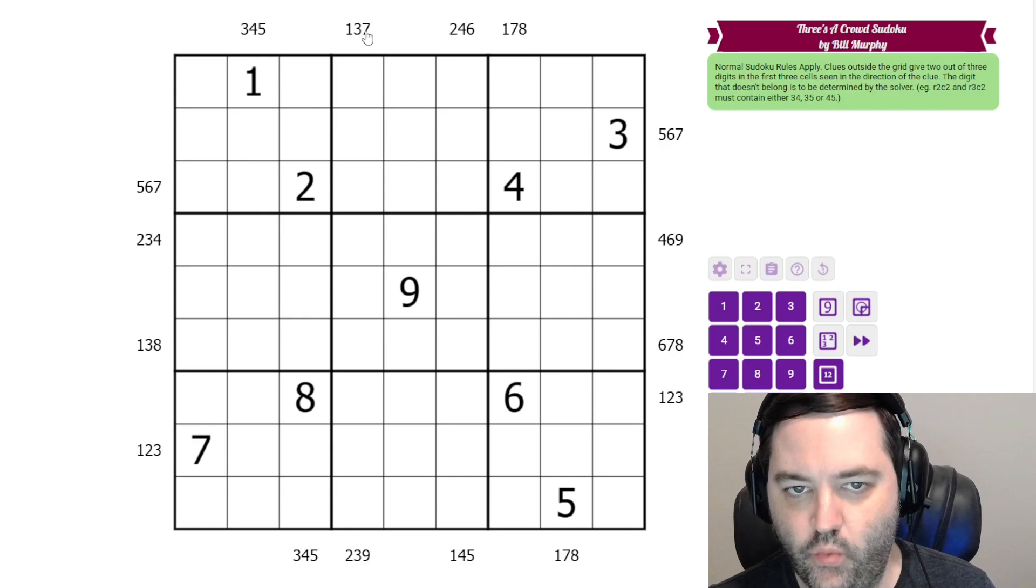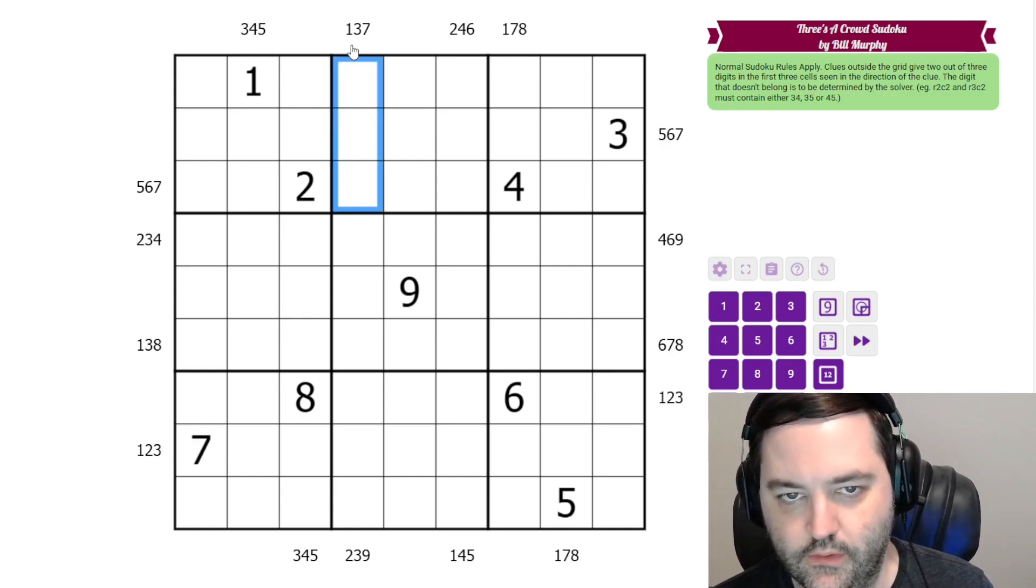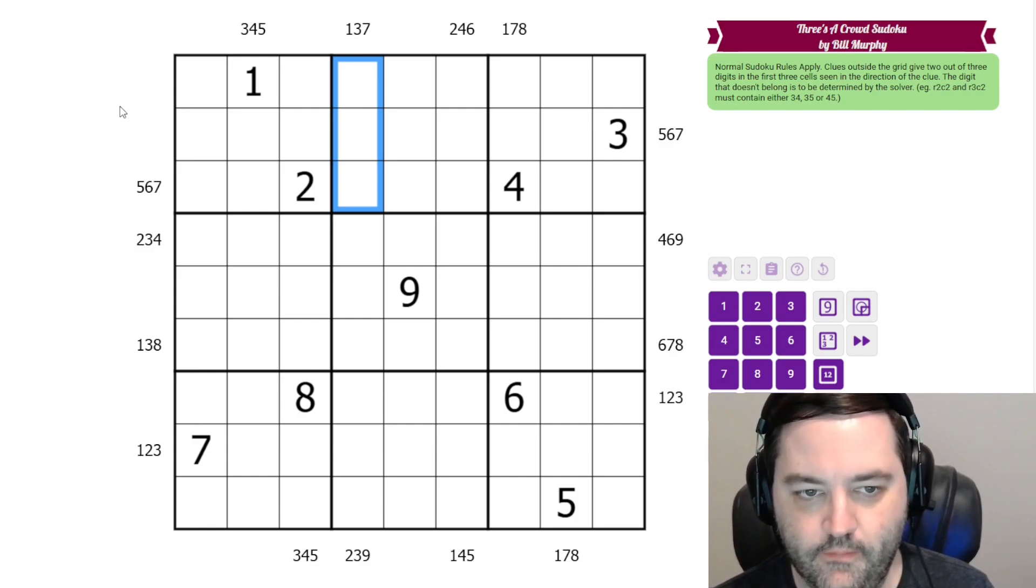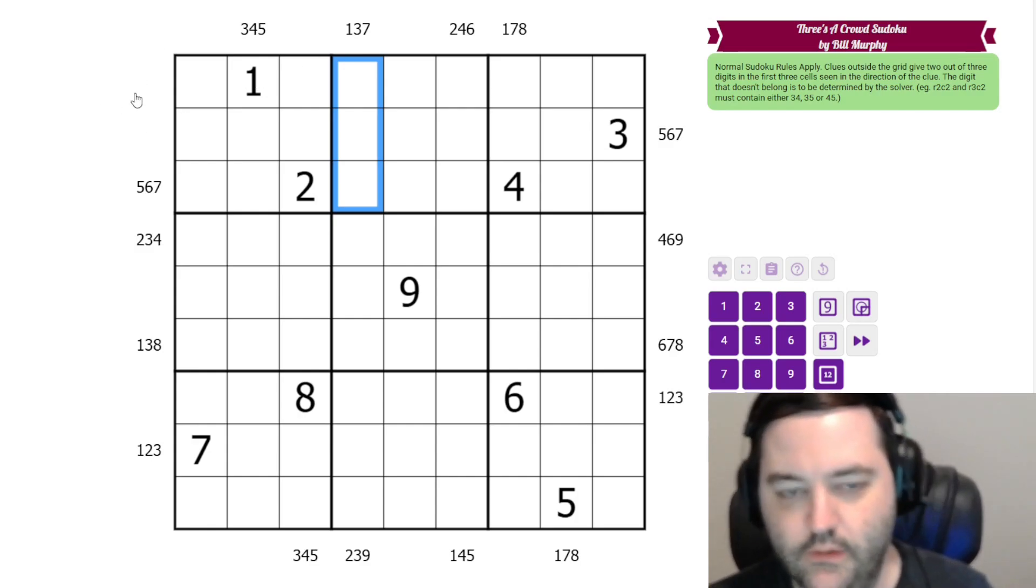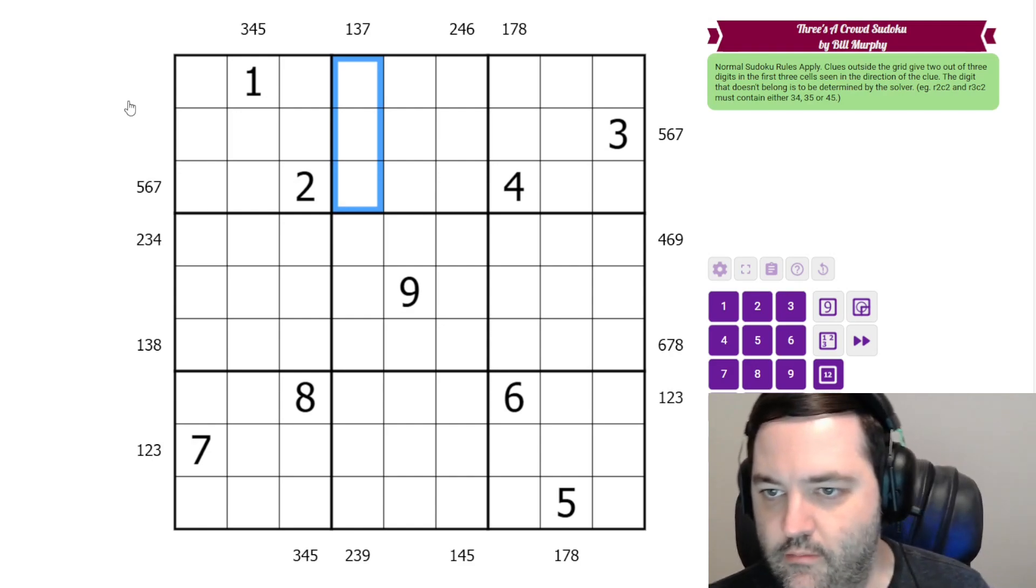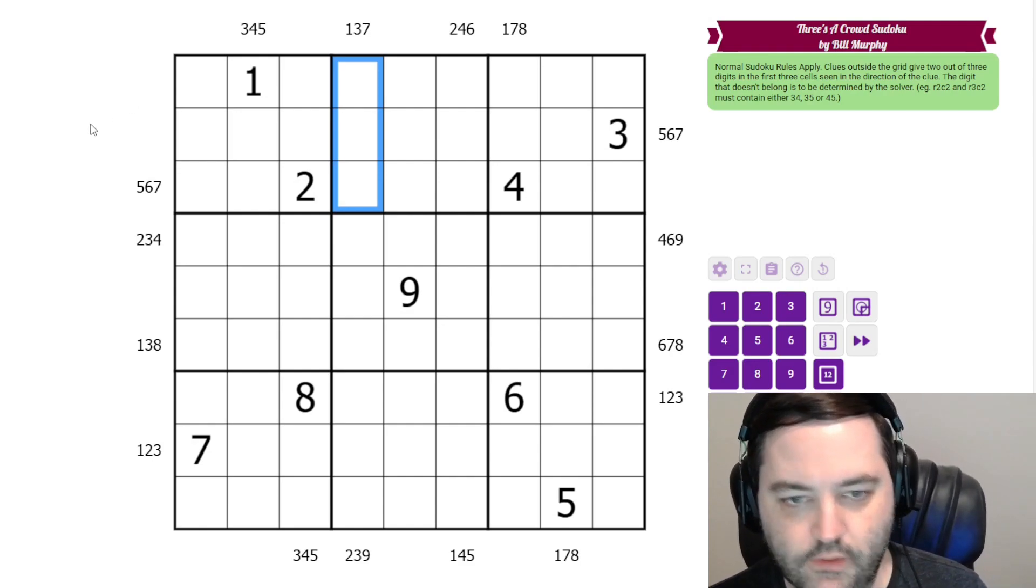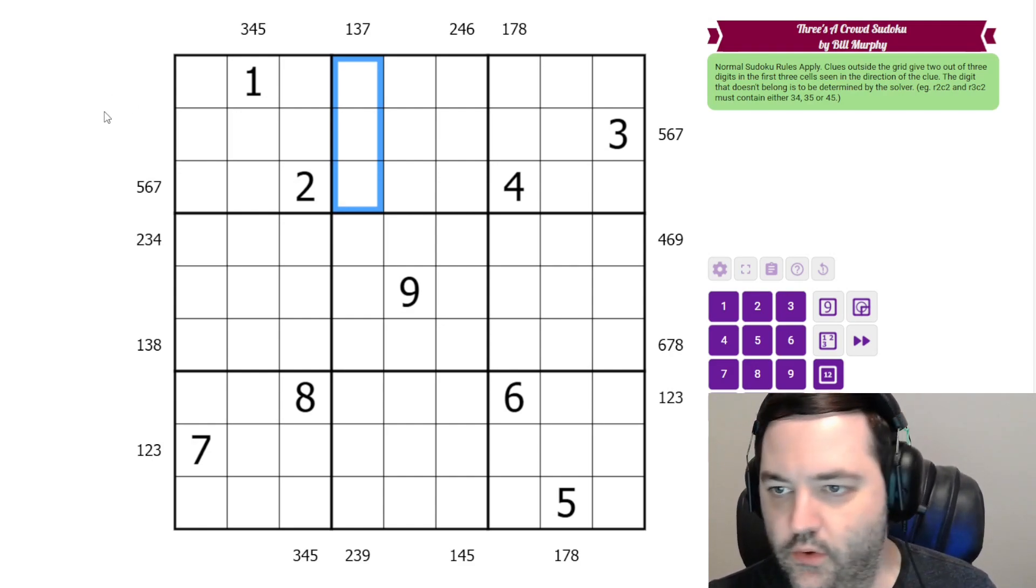There is exactly one digit that is not actually in the first three cells - either the one, the three, or the seven. So we have to figure out which one it is. But there is always one missing, and the other two are always present. Those are the rules.